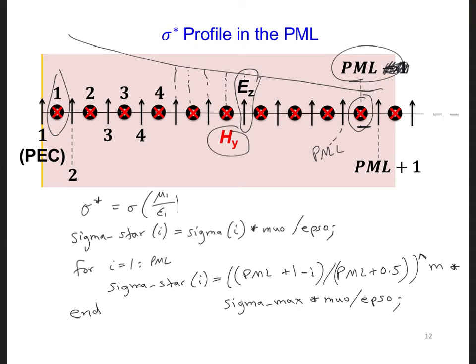So now if we plug in i is equal to PML, right here, we'll get a value of 1. So based on our diagram, Hy at i at PML, right here, is one grid cell in from the edge of the PML.